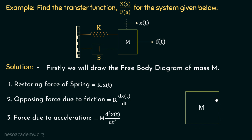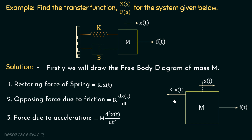The first force acting on this body is the applied force f(t), and it is applied to the right hand side, so we will have a force f(t) directed to the right hand side. Due to this, there is a displacement x(t) to the right hand side. Due to this force f(t) applied to the right hand side, the first opposing force is the restoring force of the spring, equal to k multiplied with x(t), which will act to the left hand side. Since this is an opposing force, if f(t) is towards the right hand side, this will act towards the left hand side.